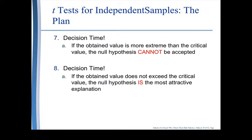Once you have obtained the value from the t-test and know the critical value, you have one of two choices. If the obtained value is larger than the critical value, the null hypothesis cannot be accepted. If just the opposite is true — if the obtained value is smaller than the critical value — then the null hypothesis is the most attractive explanation.